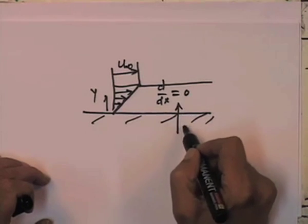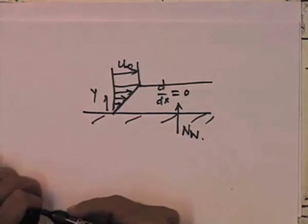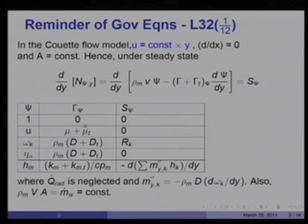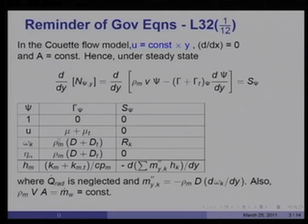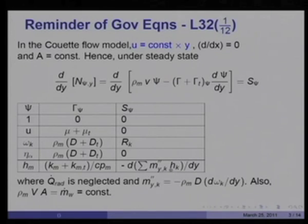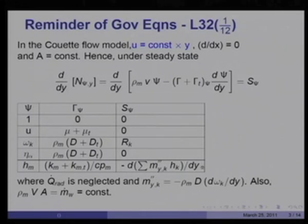Mass transfer takes place in the y-direction. If psi equals 1, it implies simply the continuity equation or mass conservation equation. Psi equal to u implies the momentum equation with gamma equal to mu. If it is mass fraction omega_k, this gives the species transfer equation, and with enthalpy it gives the energy equation. Radiation and other heat generation terms have been ignored.